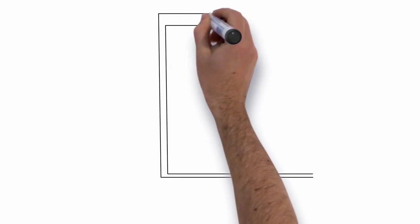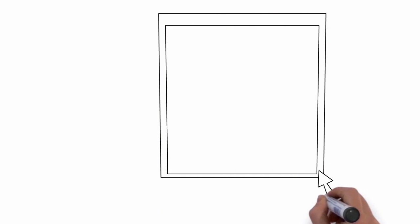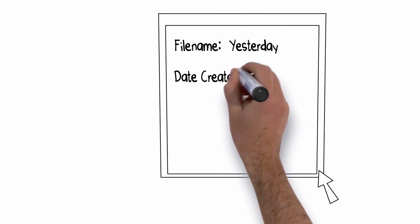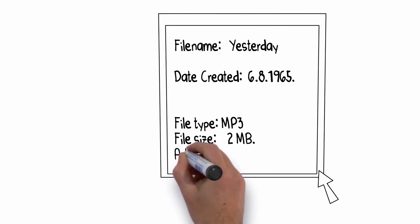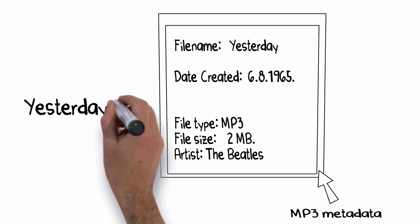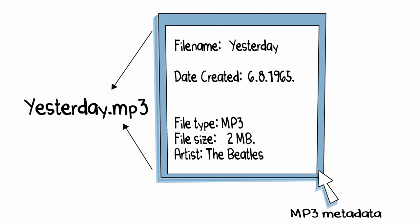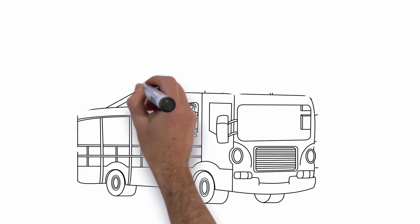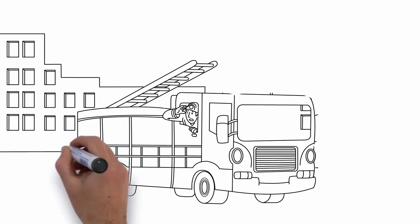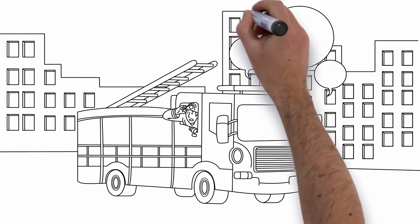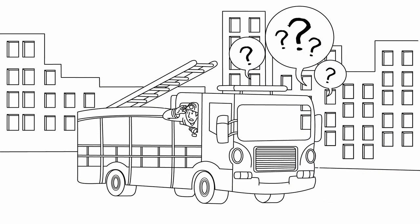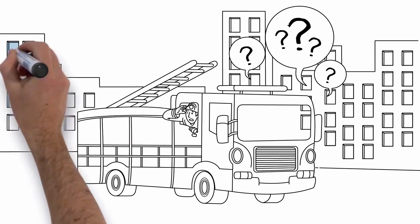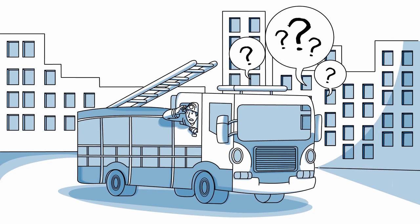Metadata is data about data. For example, music MP3 metadata would include the name and length of the song. Similarly, emergency services can't help you if they don't have the metadata needed to assist you when you dial 000 — things like your location and the nature of your emergency.